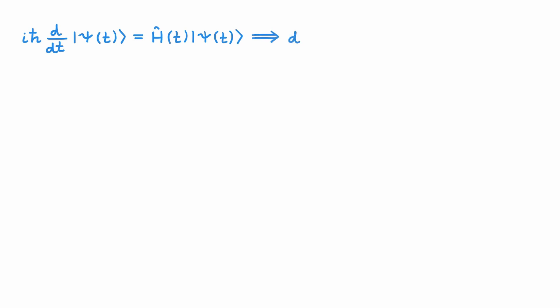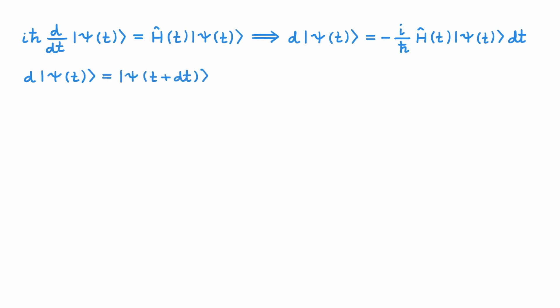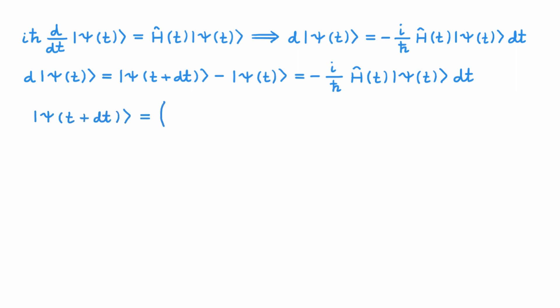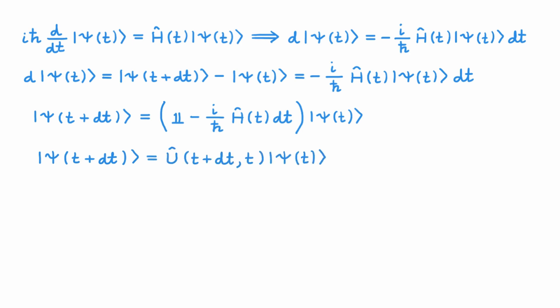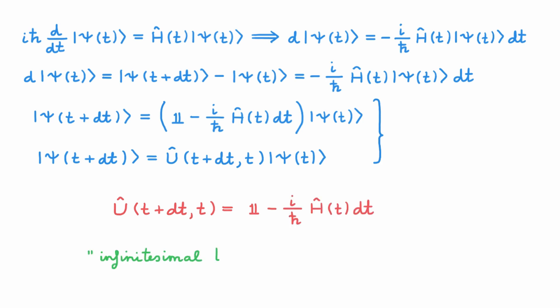The next property I want to prove is that the time evolution operator is a unitary operator, and to do so we first need to consider an infinitesimal time evolution. Starting from the Schrödinger equation, we can rewrite it as the infinitesimal change in the state ψ equal to −i/ħ times the Hamiltonian acting on ψ, multiplied by an infinitesimal time step dt. Isolating the state at t+dt, and comparing with the time evolution operator expression, we see that U(t+dt, t) equals the identity minus (i/ħ)H dt. This operator is called the infinitesimal time evolution operator.